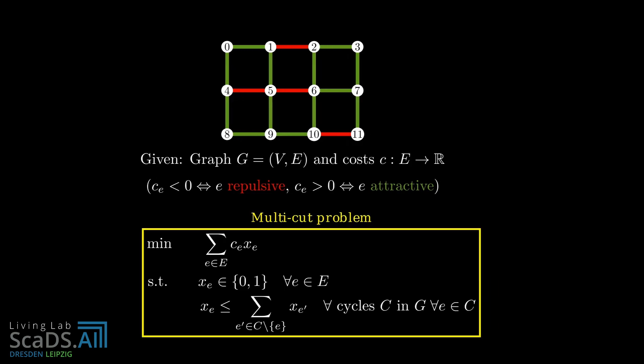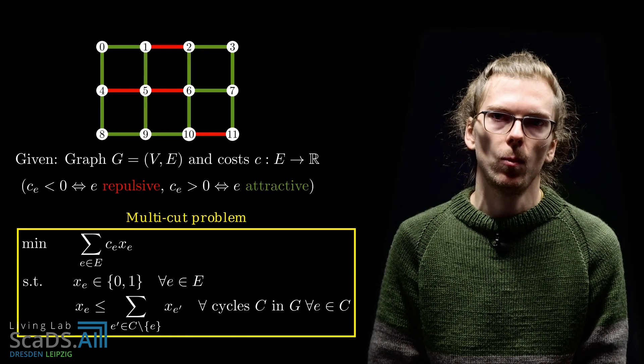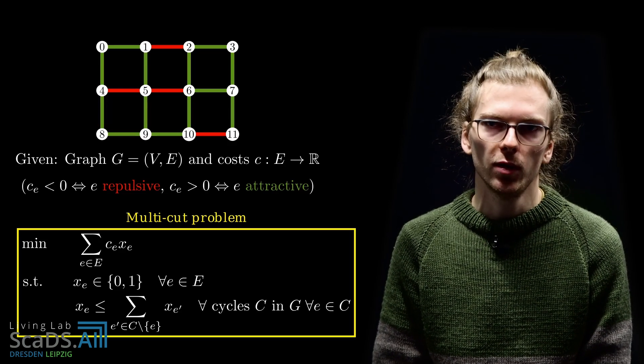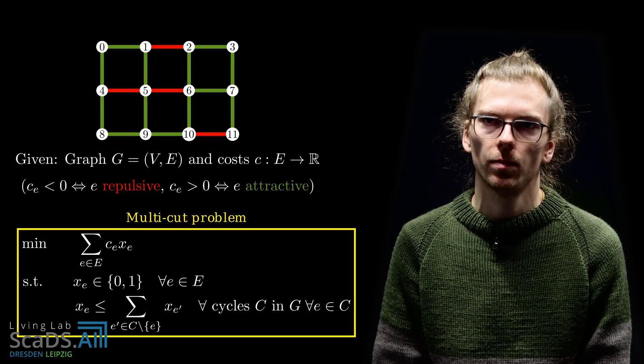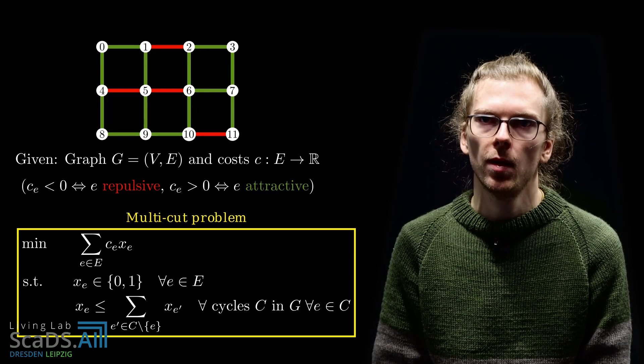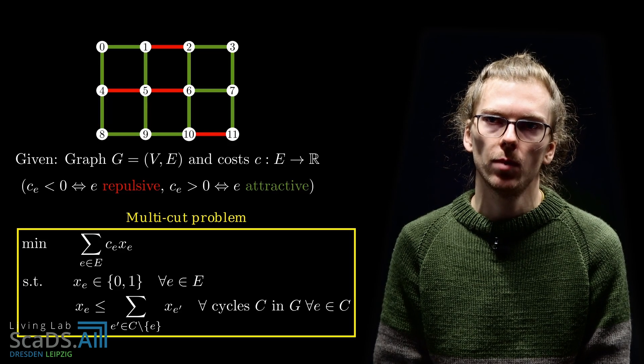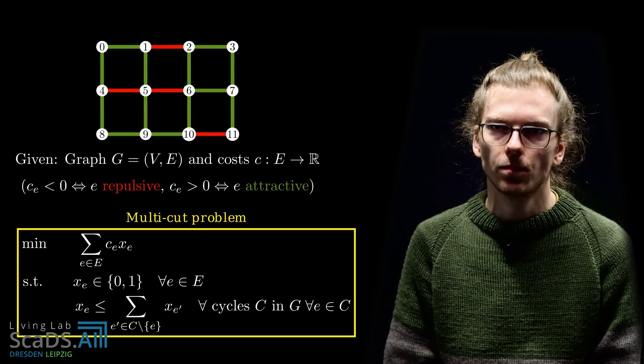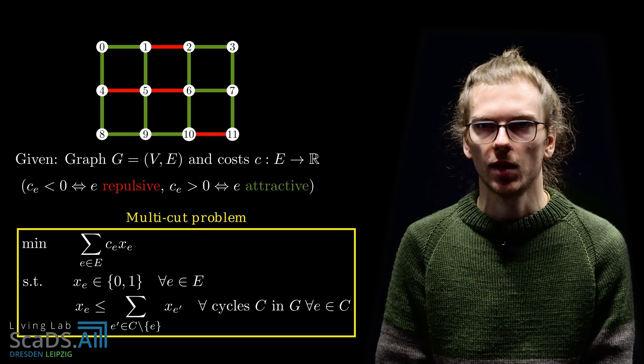The constraints are that each variable has to be either 1 or 0 indicating whether the corresponding edge is cut or not. And further, there cannot be a cycle which intersects with a multi-cut in exactly one edge. This constraint can be encoded by the so-called cycle inequality. If xe is 1, then at least one variable of the other edges of the cycle must also have a value 1. Altogether, this is the formal definition of the multi-cut problem.